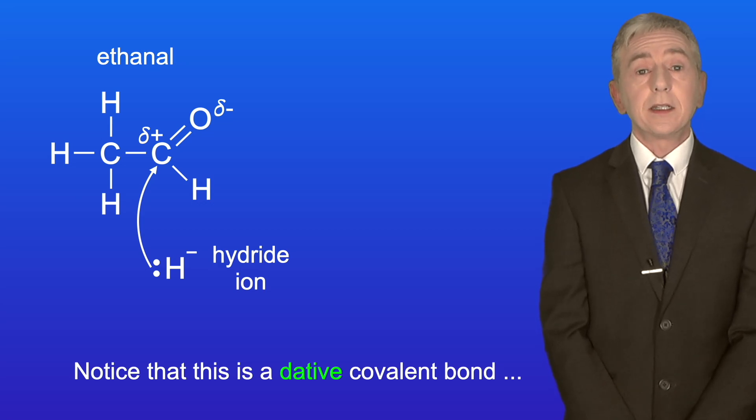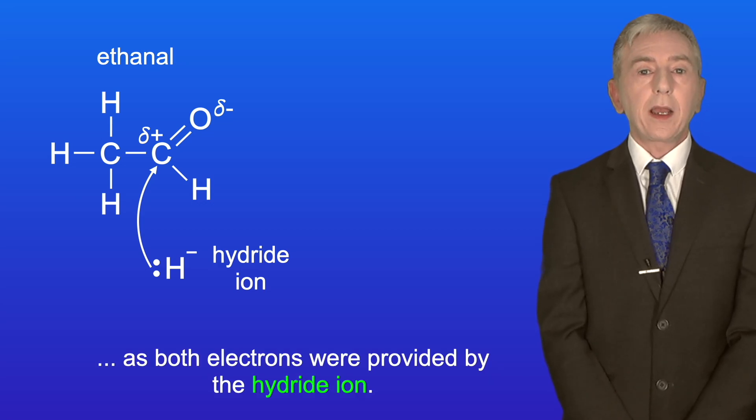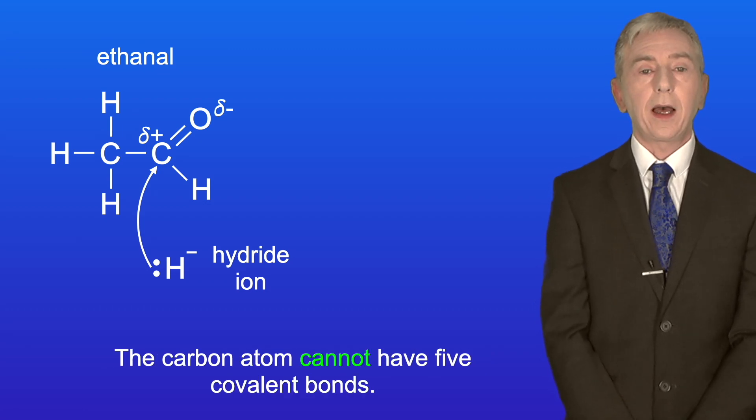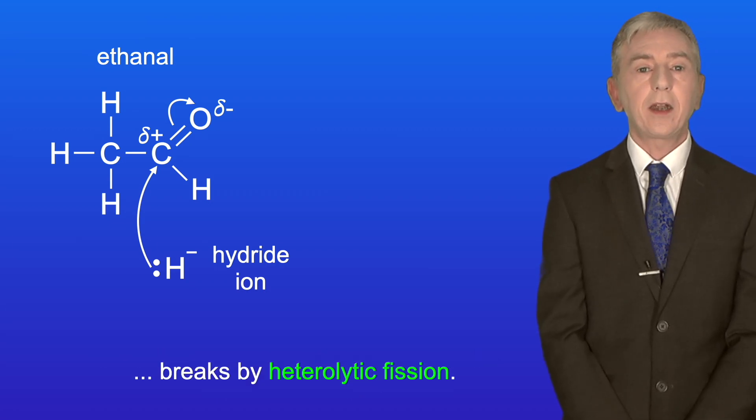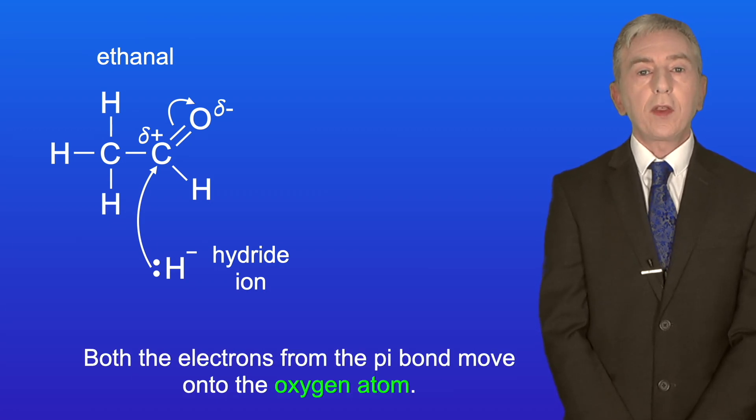Notice that this is a dative covalent bond, as both electrons were provided by the hydride ion. Now the carbon atom cannot have five covalent bonds, so at the same time the pi bond in the carbonyl group breaks by heterolytic fission. And both the electrons from the pi bond move on to the oxygen atom.